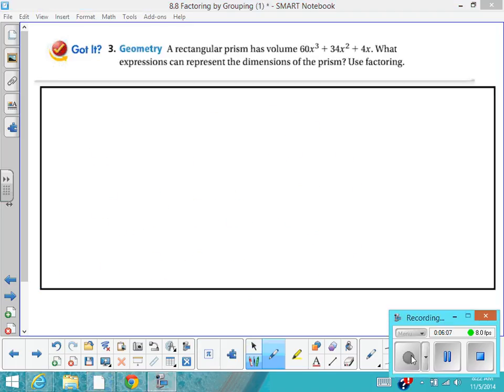Let's try a word problem here. It says a rectangular prism has a volume of 60x³ + 34x² + 4x. What expressions can represent the dimensions of the prism? So if you wanted to draw a rectangular prism, you could start by drawing a rectangle and then start with some slanted lines out to the side.